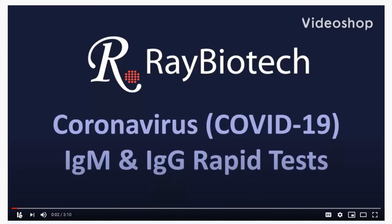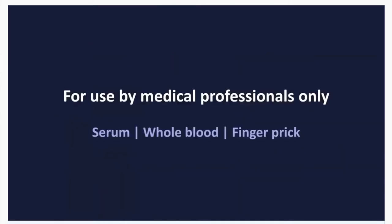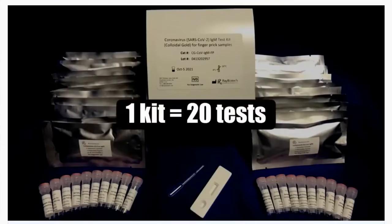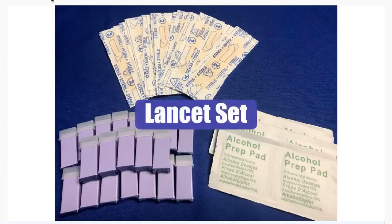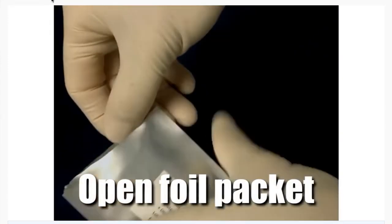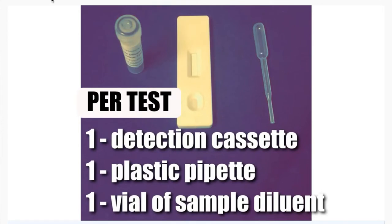Ray Biotech's COVID-19 rapid tests enable the qualitative detection of IgM and IgG antibodies to the SARS-CoV-2 viral end protein in human serum, whole blood, and finger prick samples in less than 10 minutes. Each rapid test kit contains materials to perform 20 individual tests: one instruction manual, 20 detection cassettes, 20 plastic pipettes, and 20 vials of sample diluent. To perform a test, open a foil packet containing the detection cassette, and set aside one detection cassette, one plastic pipette, and one vial of sample diluent.